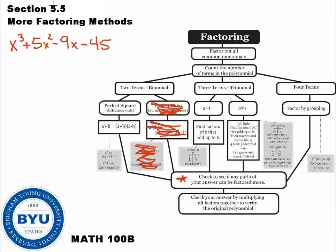So then I ask myself, how many terms? One, two, three, four — so a four-term polynomial. If I'm following the map, that means I factor by grouping.